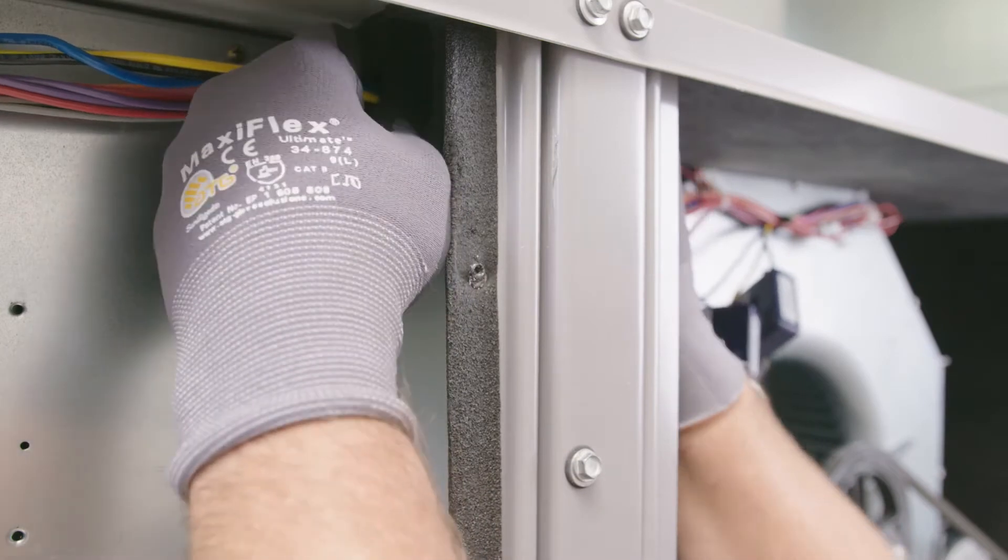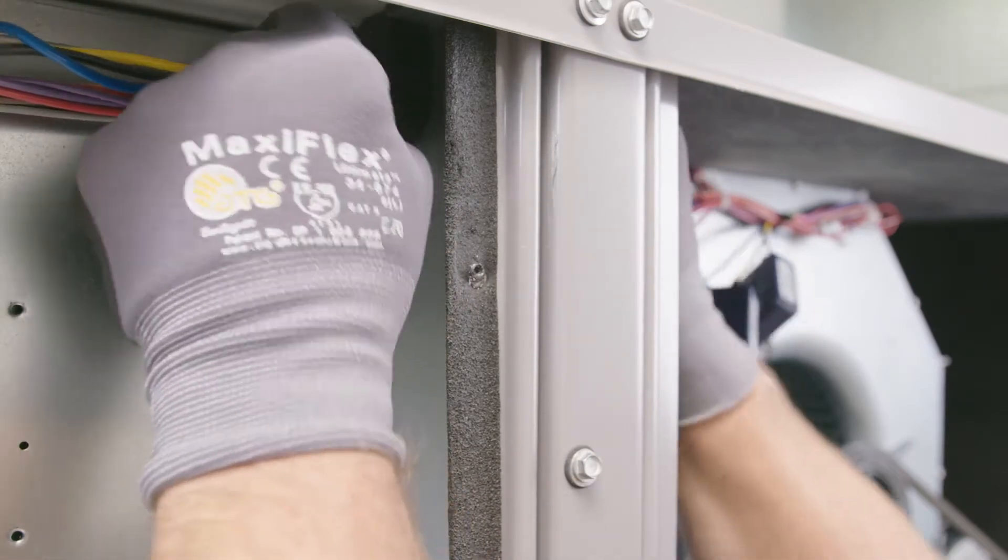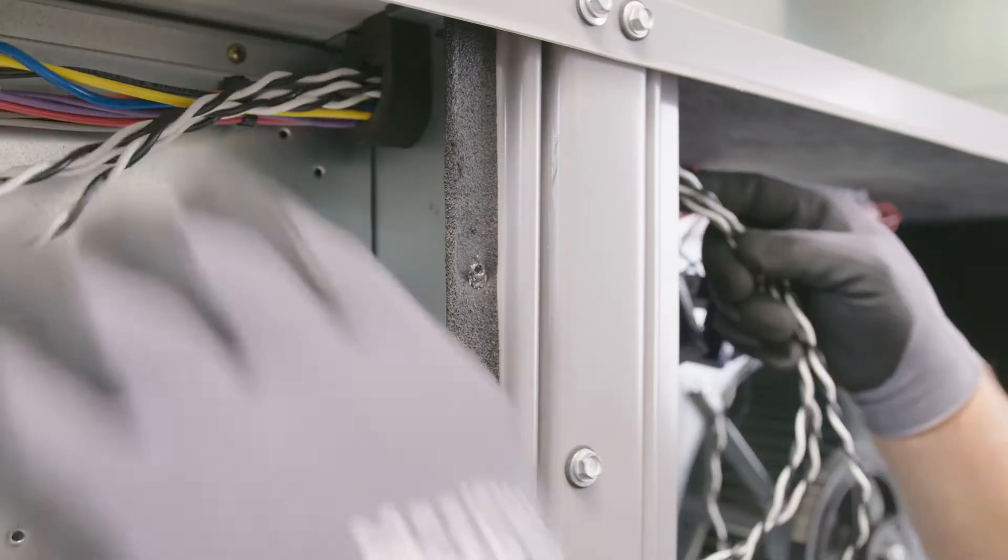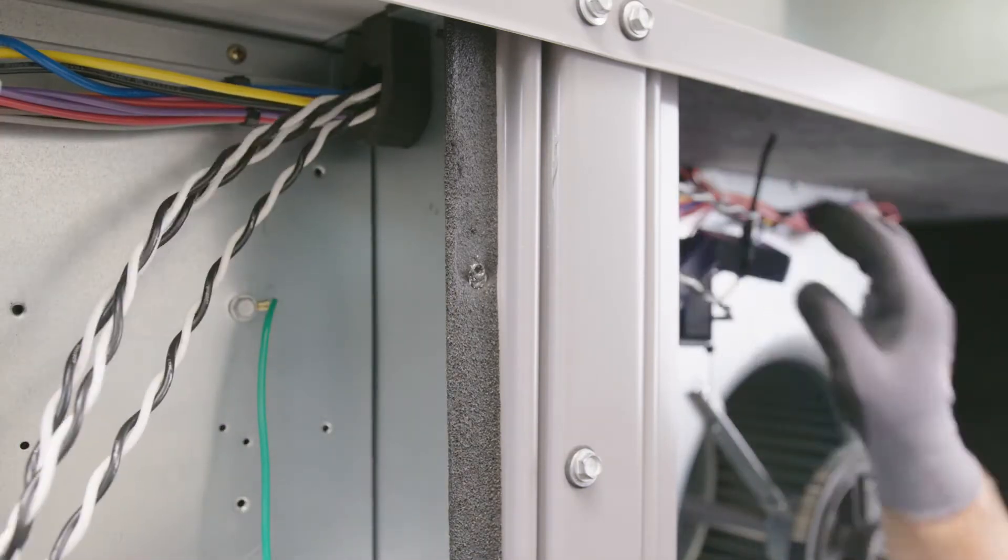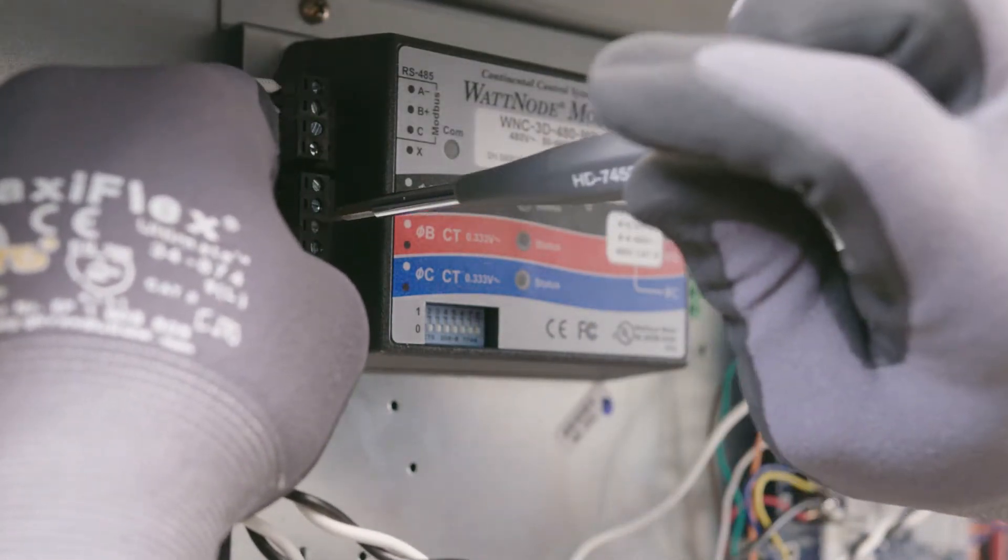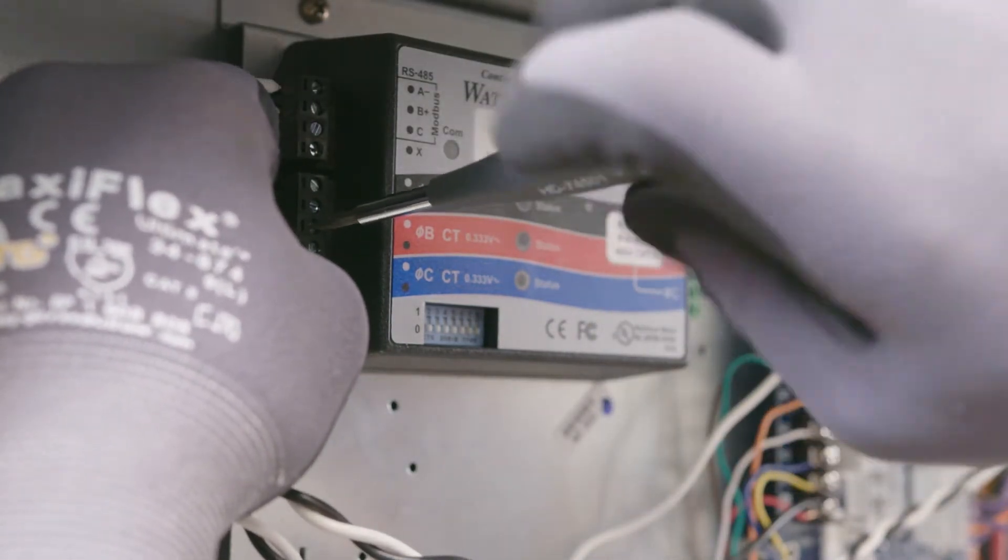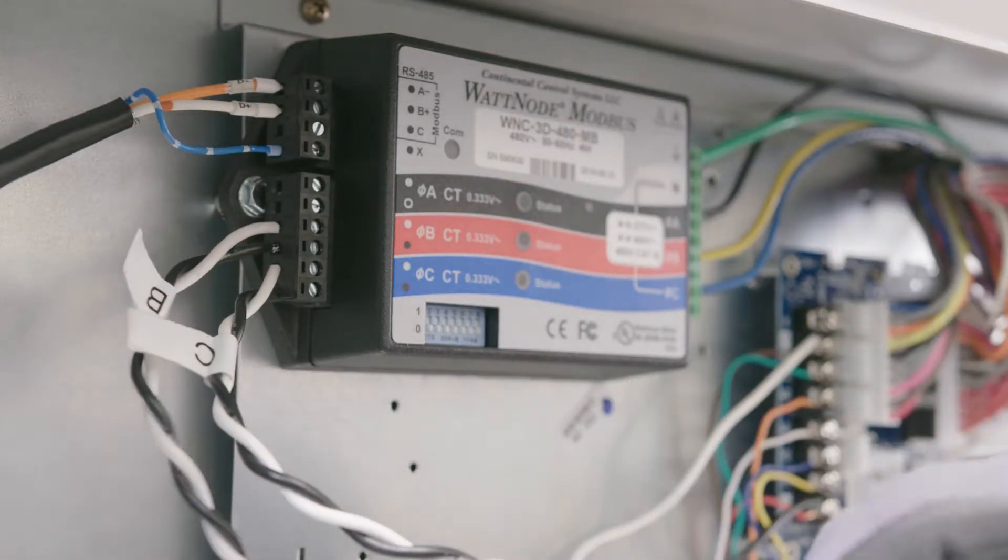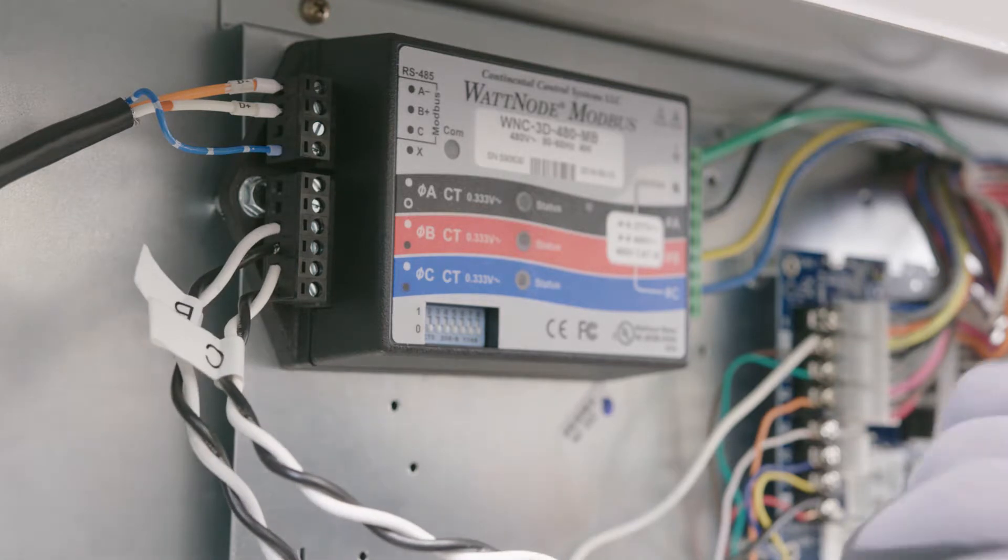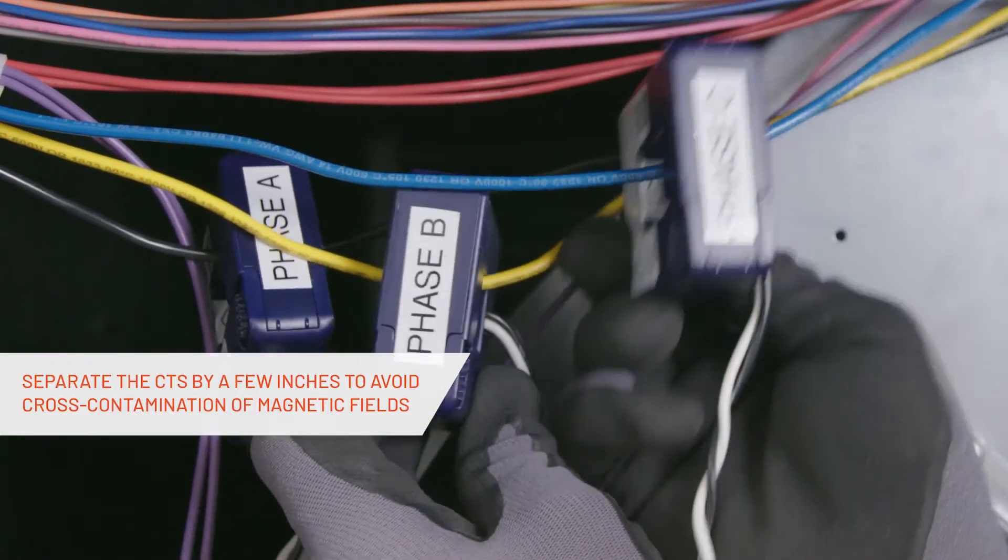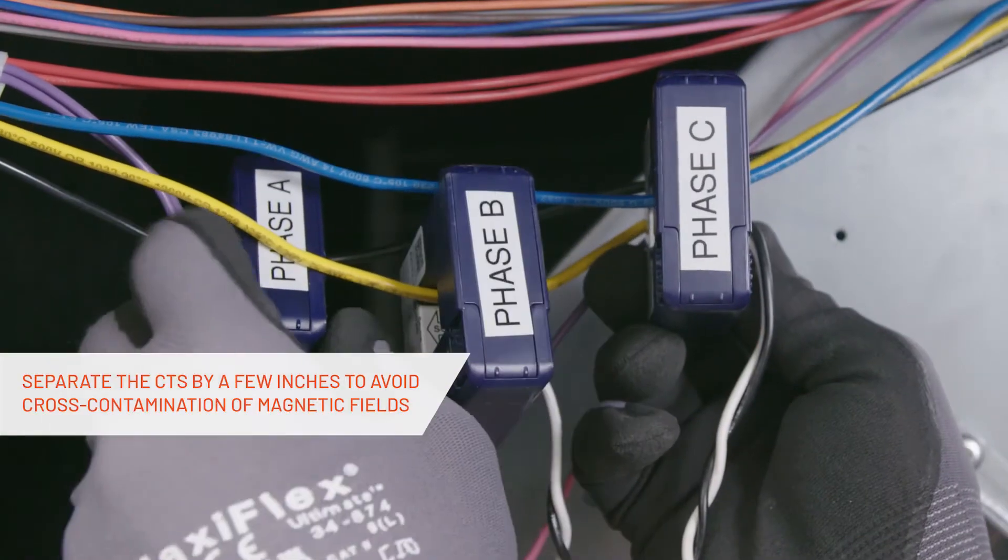The next step is to route the wires from the CTs over to the meter, which we mounted in the control panel. First, simply route the wires through the existing conduit channel for the unit. Then, mount the first A phase CT on the power wire for phase A, which is the black on this unit, again making sure the arrow on the CT is pointing towards the power source of the unit. Repeat this step with the B and C phase CTs. Make a point to separate the CTs by a few inches, so you avoid cross-contamination of magnetic fields.